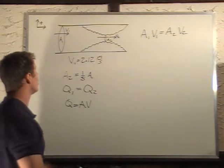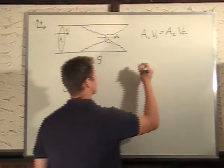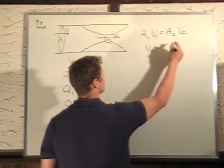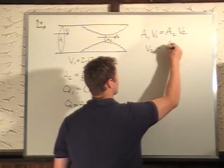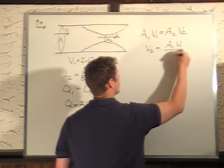So I'm looking for V2. I want to know what V2 is. V2 equals—so I solve by dividing A2 to the other side—A1V1 over A2.